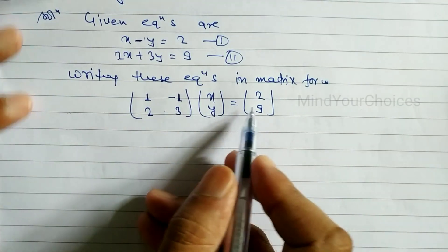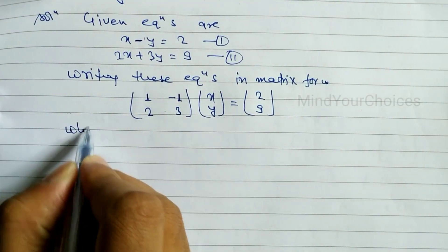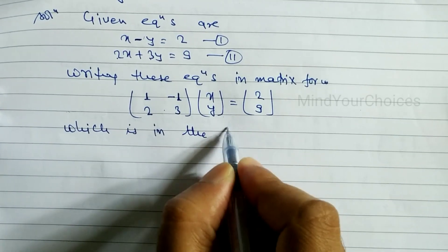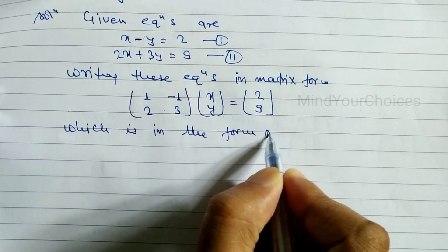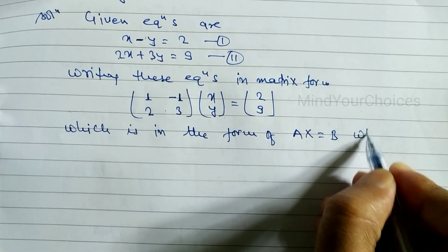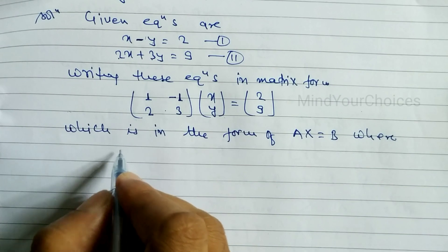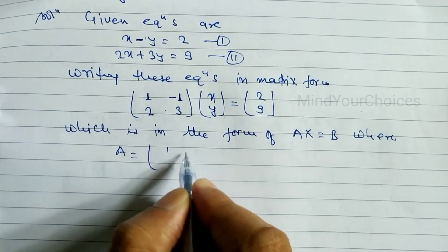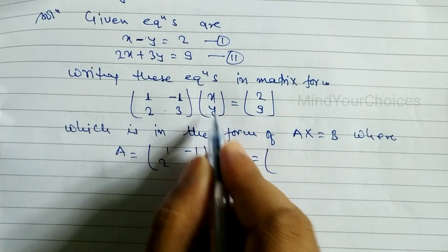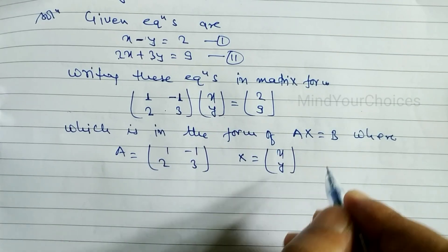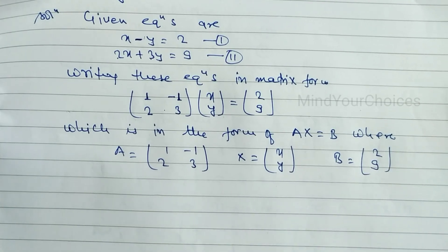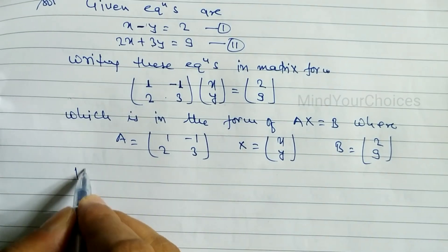This gives us the form AX equals B, where matrix A equals [1, -1; 2, 3], matrix X equals [x; y], and matrix B equals [2; 9].